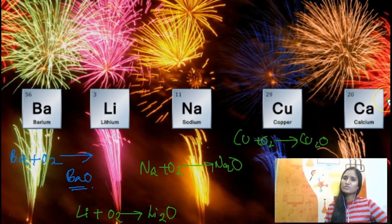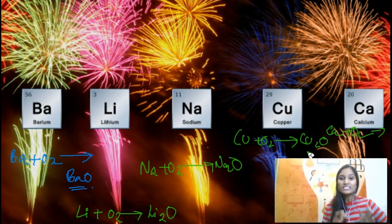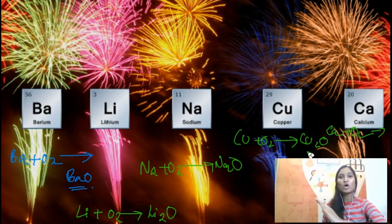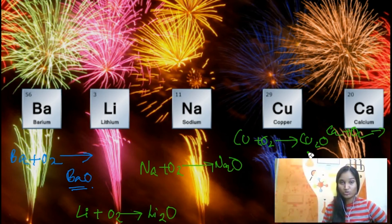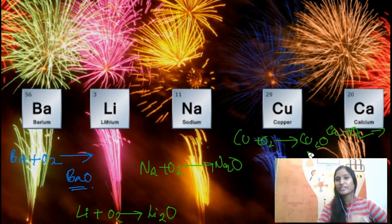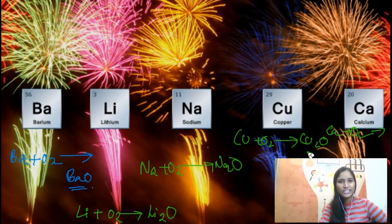Calcium — first of all, calcium doesn't catch fire easily; it takes a few seconds. These are the colors produced when barium, lithium, sodium, copper, and calcium react with oxygen. The reaction of any metal with oxygen has to be called oxidation. So can I say that fireworks are giving you these beautiful colors out of their oxidation reactions?